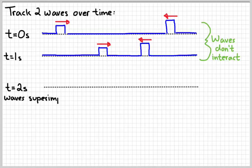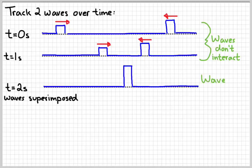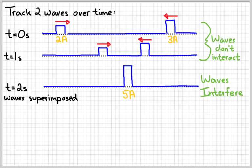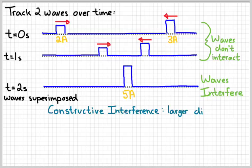It's not until two seconds when the waves actually meet and are in the same place at the same time that wave interference actually occurs. The way I've drawn this, with an amplitude of about 2a for the first one and about 3a for the second one, the waves interfere to produce a wave whose amplitude is about 5a. So at that point, the waves are in the same place at the same time, and they interfere. This is referred to as constructive interference, meaning we get a larger displacement — a distance of 5a — than either of the two original waves would have given us.